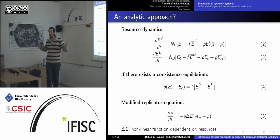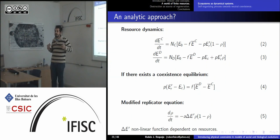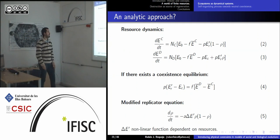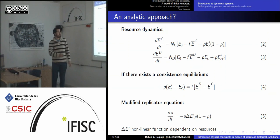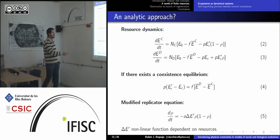If there is a coexistence equilibrium — noting that the prisoner's dilemma normally predicts cooperators go extinct (tragedy of the commons) — the condition for coexistence is that the net benefit equals the resources dissipated by deaths. If this holds, there is an equilibrium, and this can be shown to lead to a modified replicator equation.